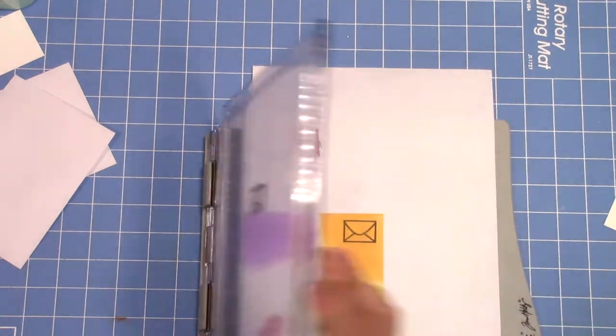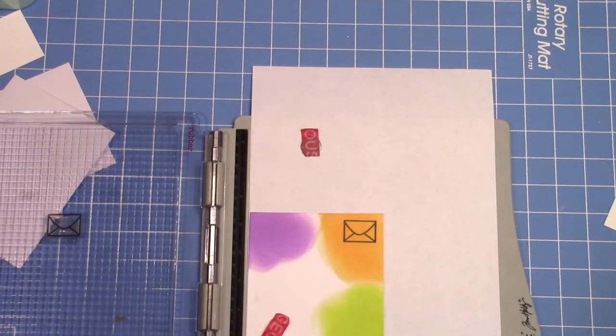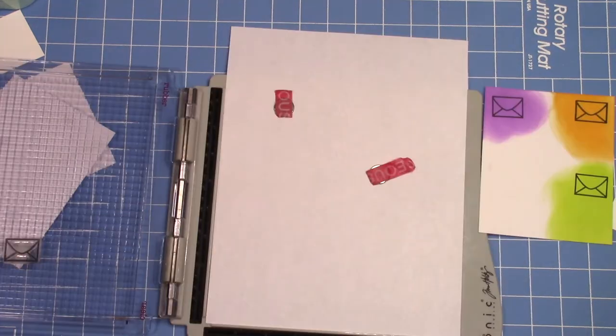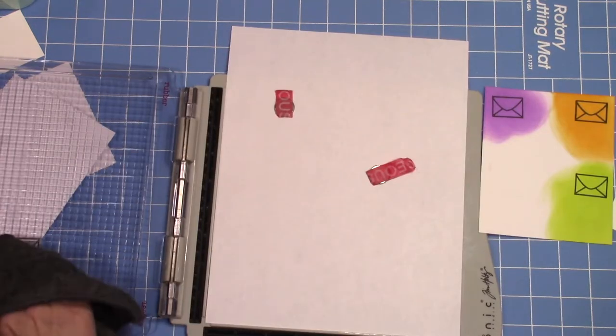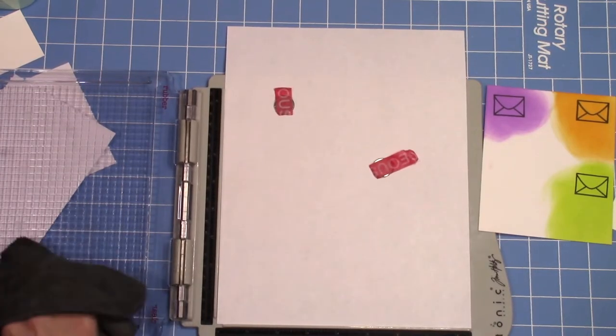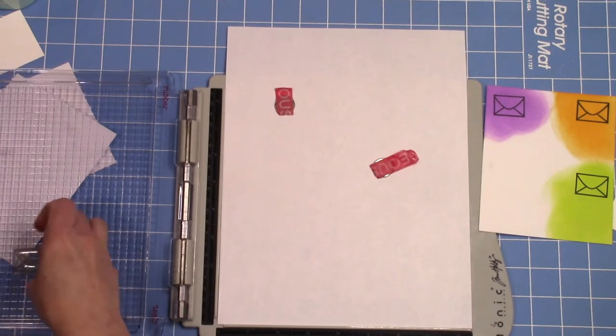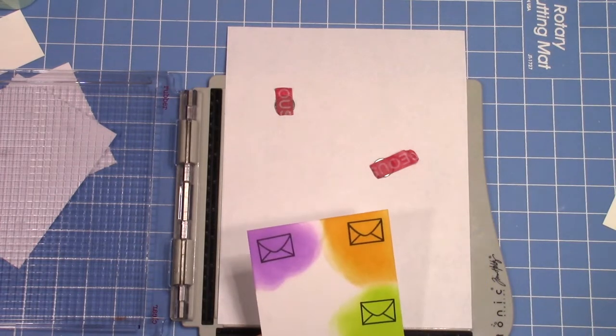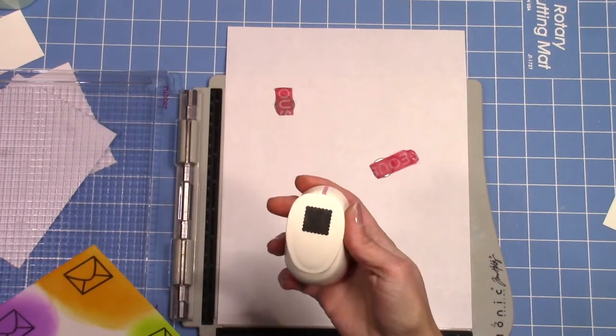I stamped each one three times because the oxides kind of dull out anything that you put on top of it. So if you want a nice crisp bright image and you're putting it on top of oxide ink, you're going to have to stamp it multiple times.